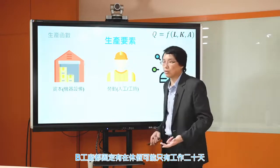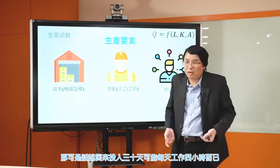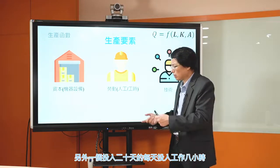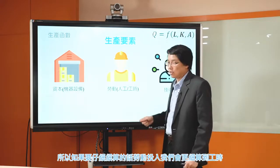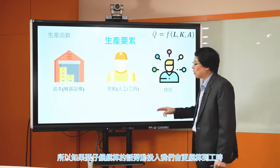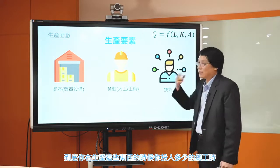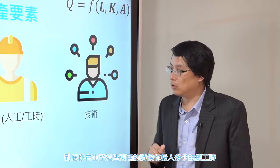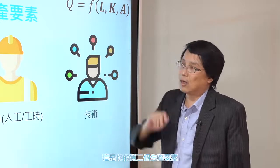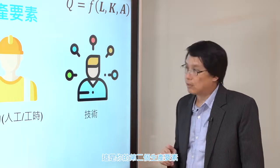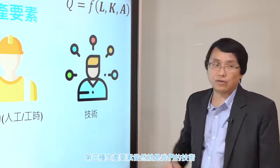有些時候用人工數可能不精確，因為每個人工作的天數可能不大一樣。比如A工廠一個月雇三十個員工，三十天都在工作；B工廠也雇三十個員工，但有固定休假只工作二十天。如果再細算，工作二十天的每天做滿八小時，而工作三十天的每天只工作四小時，所以如果要仔細計算的話，有些時候勞動投入我們會更細算到工時，就是到底投入多少的總工時。